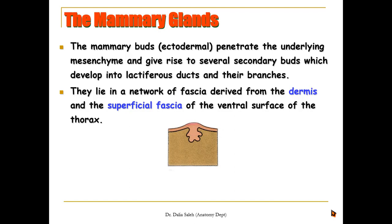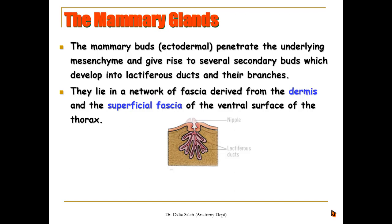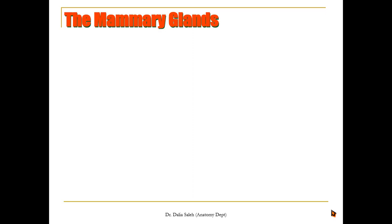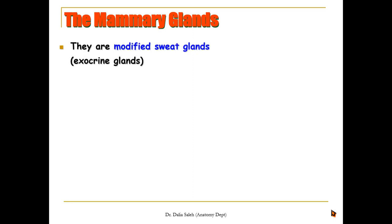The mammary buds that arise from the epidermis grow and penetrate the underlying mesenchyme of the dermis, giving rise to many secondary branches. At first they are not canalized, and later they become canalized and open at the surface of the skin at a projection called the nipple. At first it is inverted, but by the time of birth the nipple projects over the skin and becomes everted.